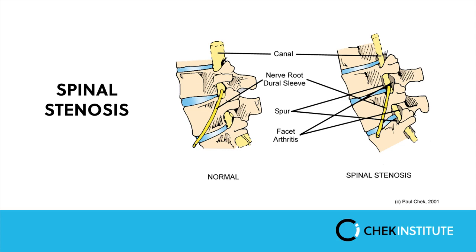Congenital lumbar stenosis is relatively rare and usually presents at an early age, often between 30 and 40 years old. Acquired lumbar spinal stenosis is more common and generally develops when patients are in their 60s and older. Treatment ranges from rest to surgical decompression by removal of the bone that's compressing the neural tissue.